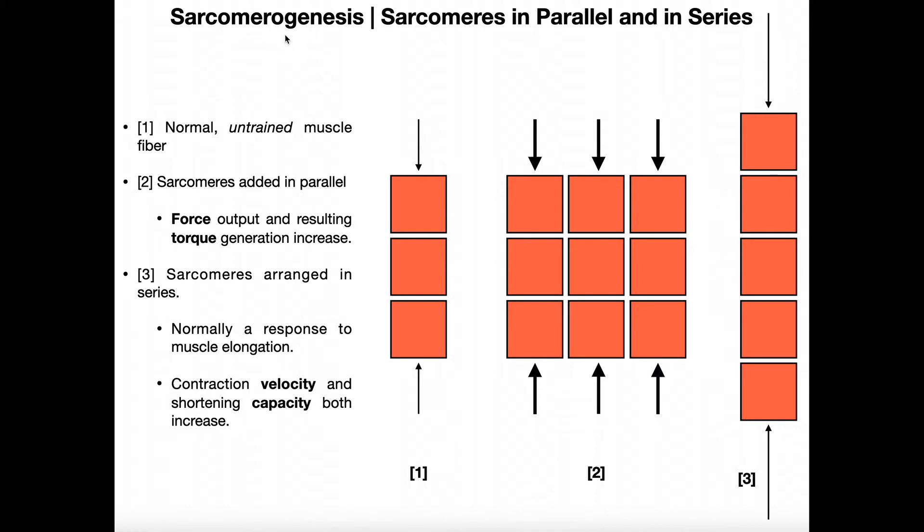Now sarcomerogenesis occurs with two different mechanisms: sarcomeres in parallel and sarcomeres in series. So what we're talking about here is the addition of new sarcomeres, or in one case the removal of sarcomeres. Let's start by looking at case number one right here. This is a normal, untrained skeletal muscle fiber, and each one of these squares represents a sarcomere. Obviously we've got many more sarcomeres than this. This is just an abstract picture so you can understand the concept. So here we've got three sarcomeres.